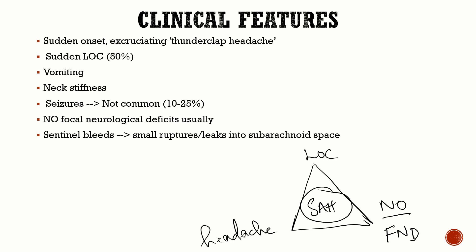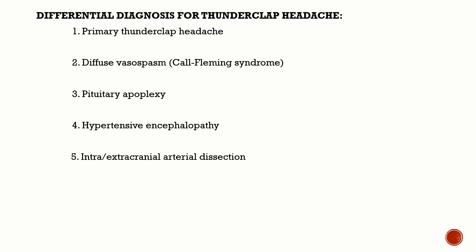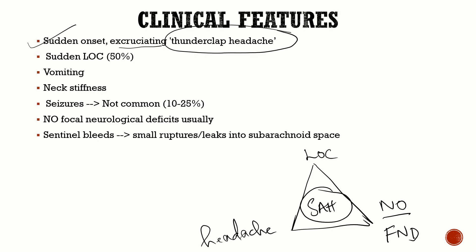The patient has a sudden onset excruciating thunderclap headache — the worst headache of their life. Differential diagnoses for thunderclap headache include: primary thunderclap headache, diffuse vasospasm (called Fleming syndrome), pituitary apoplexy, hypertensive encephalopathy, and intra- or extracranial arterial dissection. The patient also presents with sudden loss of consciousness and vomiting due to raised ICP, along with neck stiffness.